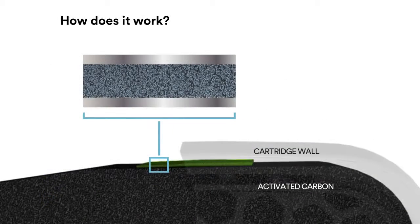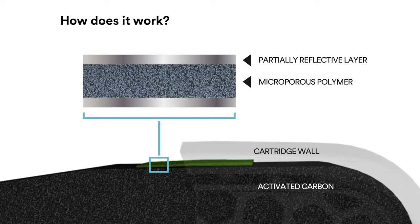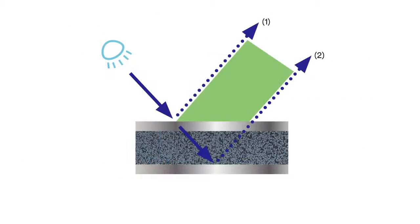The ESLI has a partially reflective top layer, a microporous polymer, and a reflective bottom layer. When viewing the end of service life indicator, the partial mirror reflects some of the light while allowing the remaining light to travel through the ESLI and reflect off the bottom. The resulting interference is seen as green.